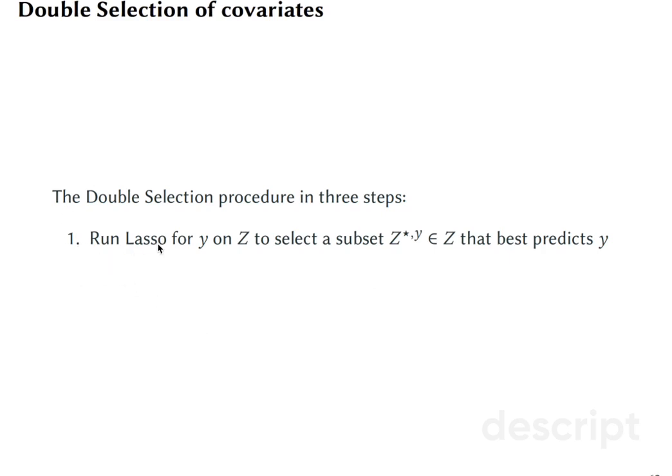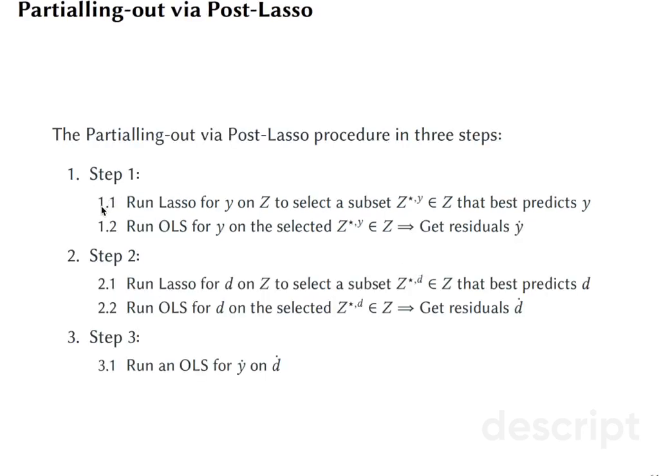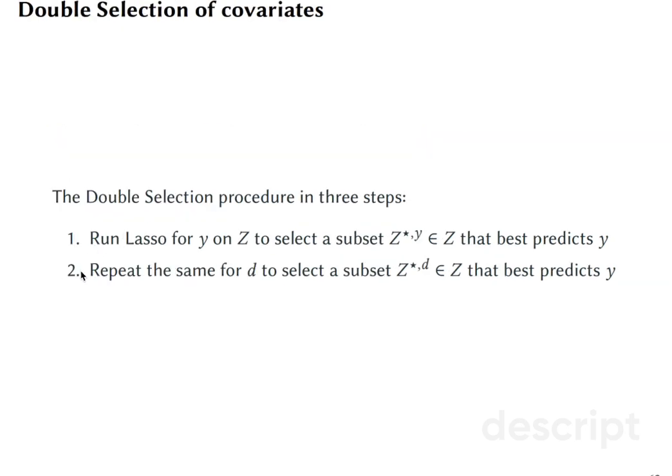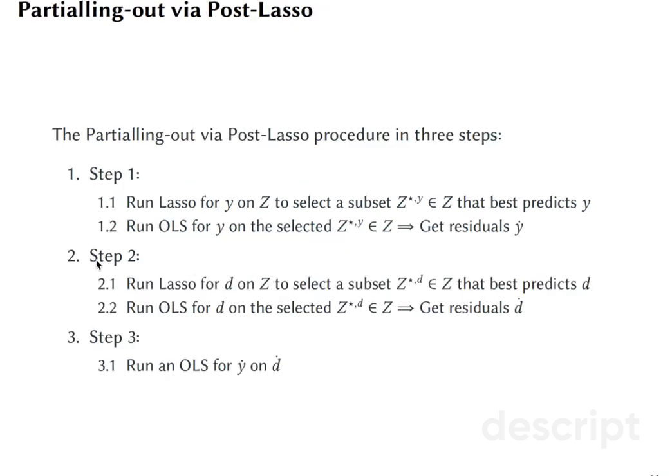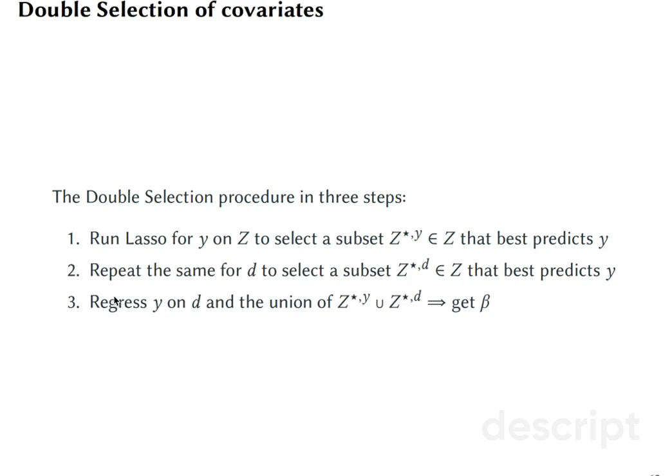The double selection procedure also has these three steps but they are somewhat different. In step one, you run Lasso for Y on Z and you find this subset, so it's exactly the same as 1.1, but you don't do 1.2. Step two, you do the same for the treatment variable, the same as in step 2.1, but you don't do step 2.2. And in the end, you just regress Y on Z and the union of the important variables that were collected for Y and important variables that were predicting D.